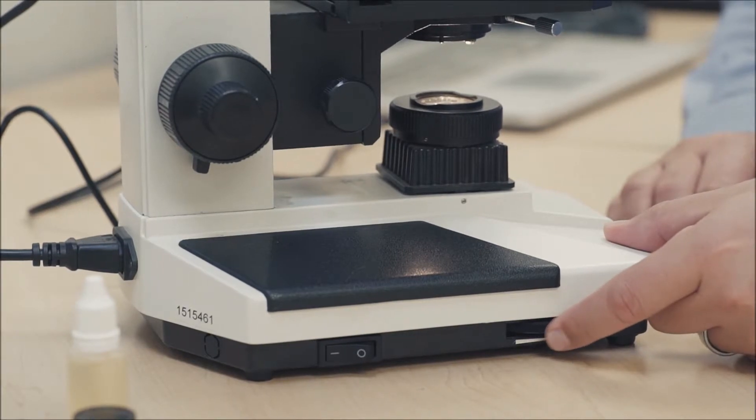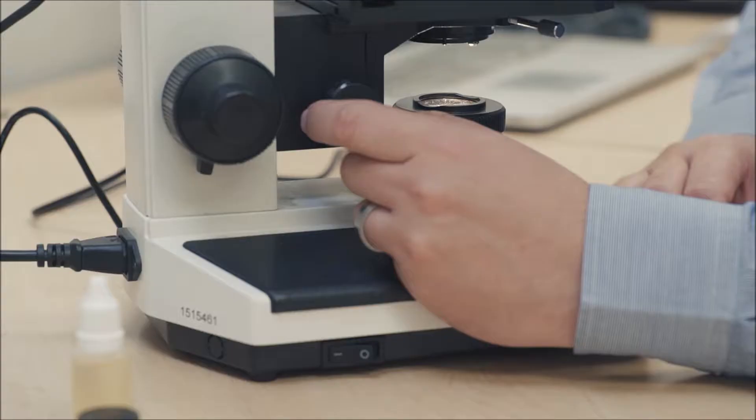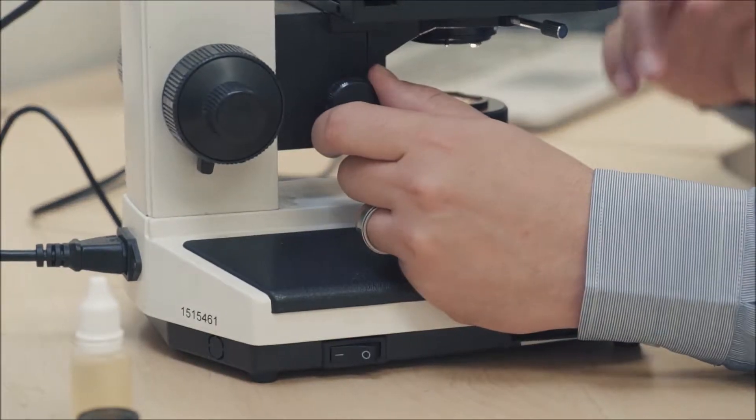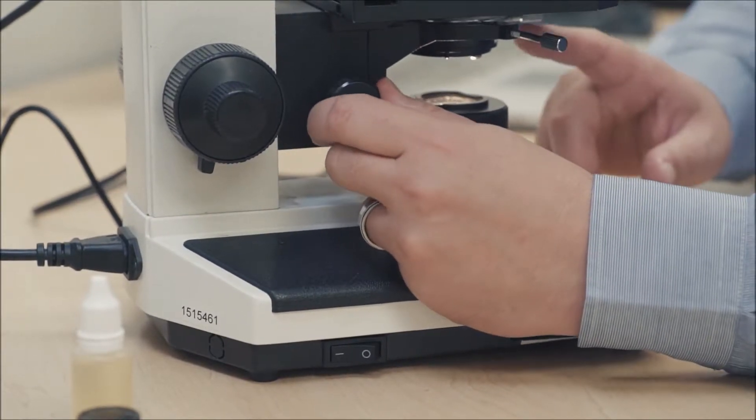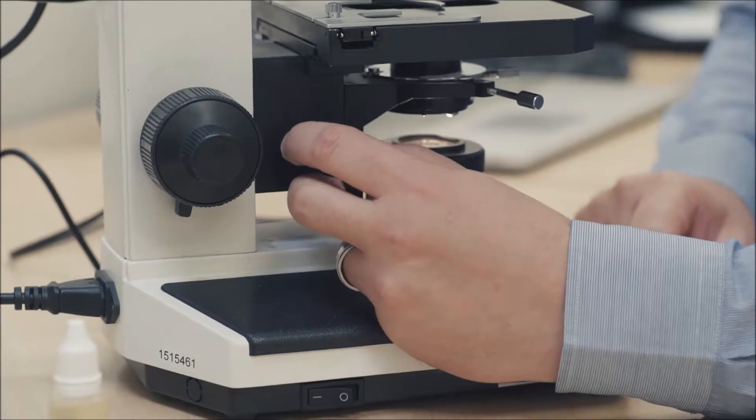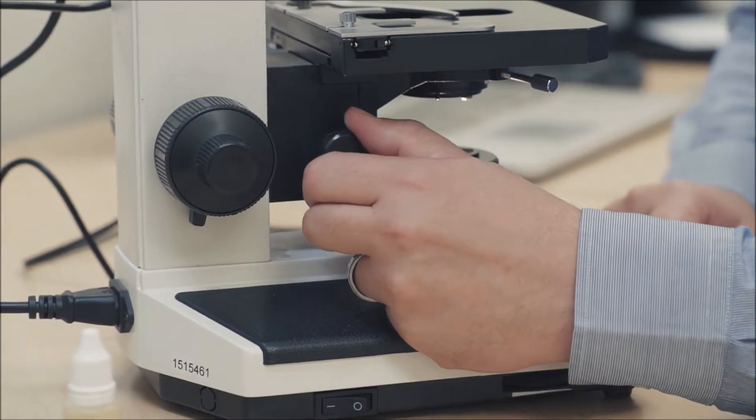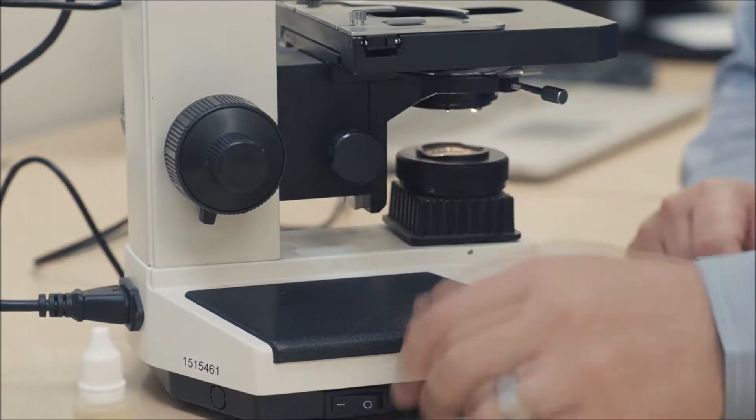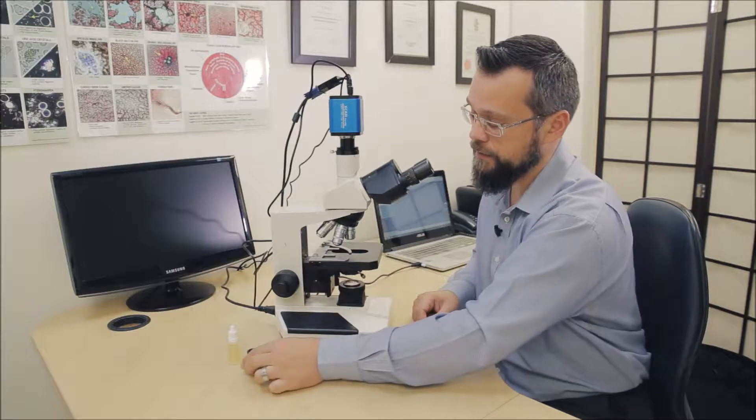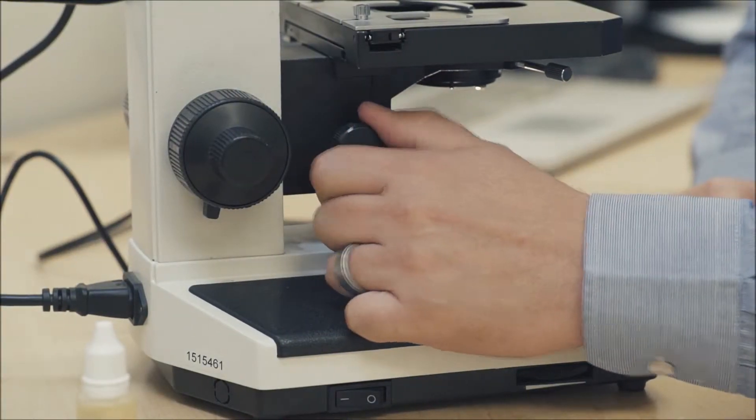Going on to the condenser control knob here, this is a very important one. You'll see that the stage doesn't move when I adjust this. It's just the condenser unit that moves when we move the condenser control knob. The reason we do that is just when we're removing the brightfield condenser and placing the darkfield condenser into place under the stage.